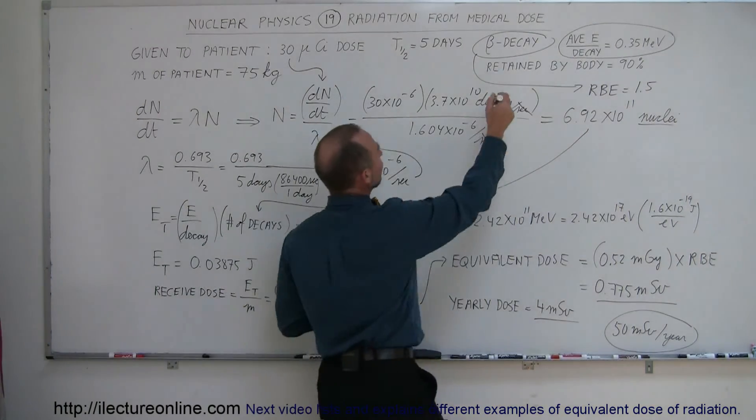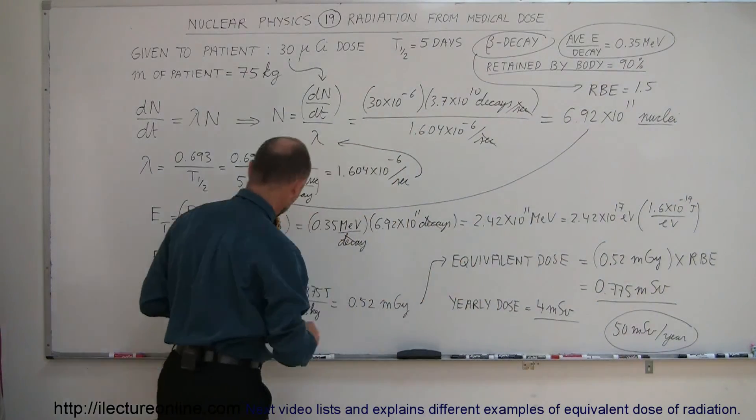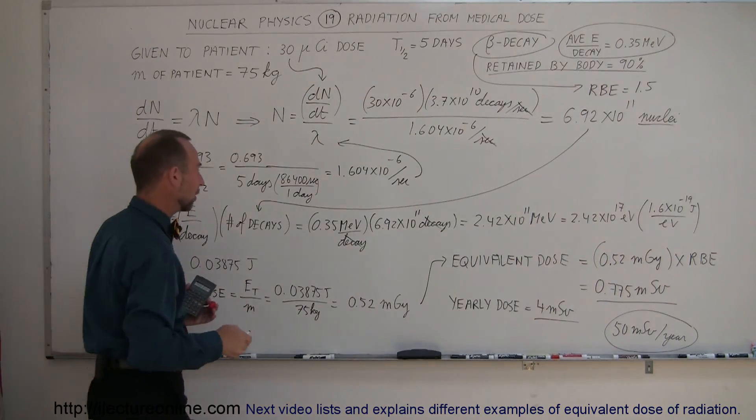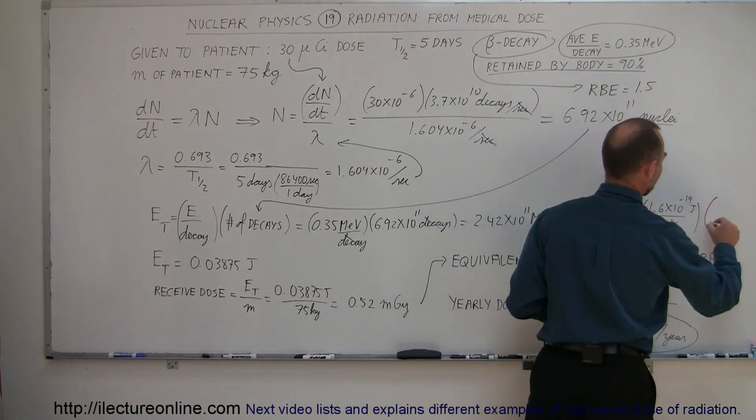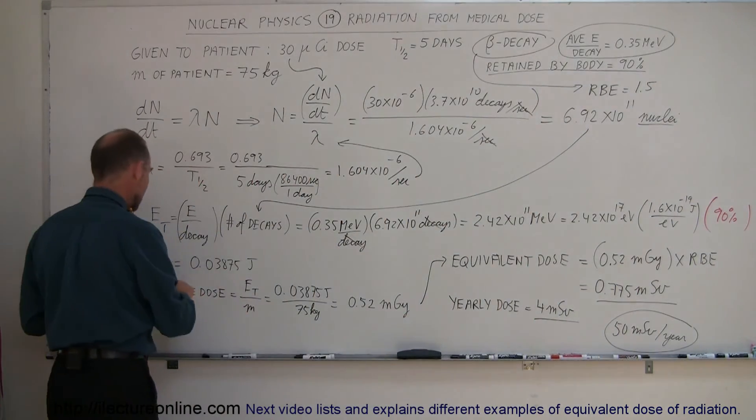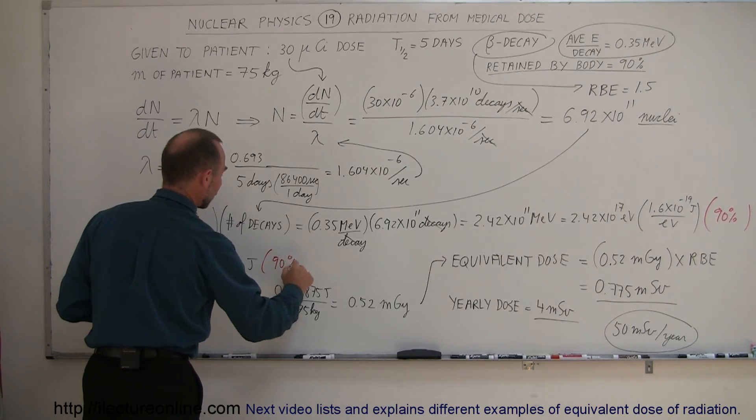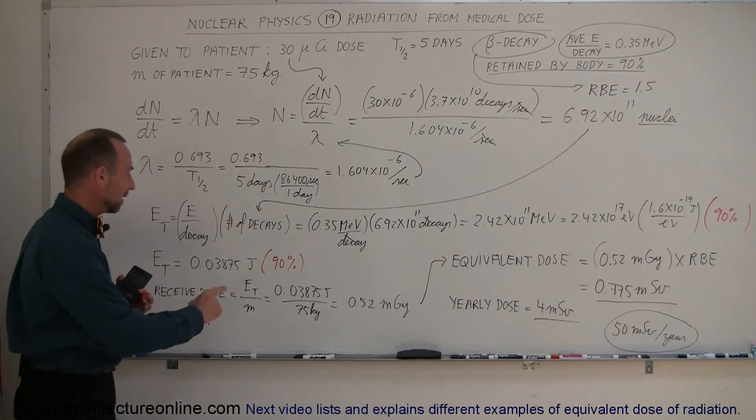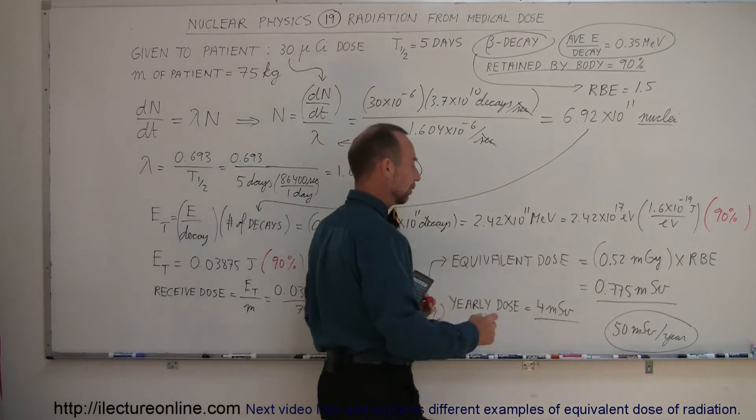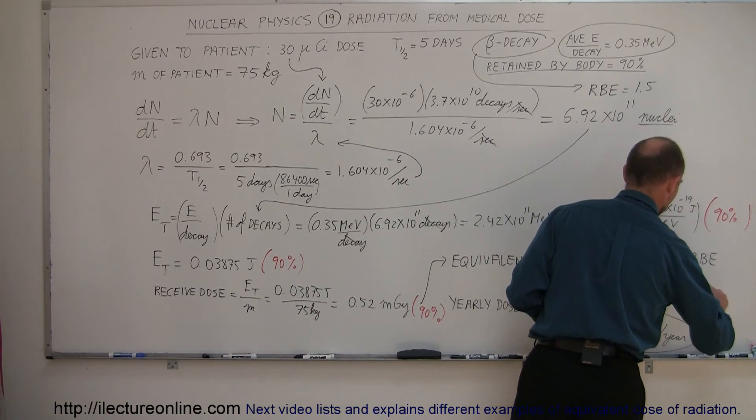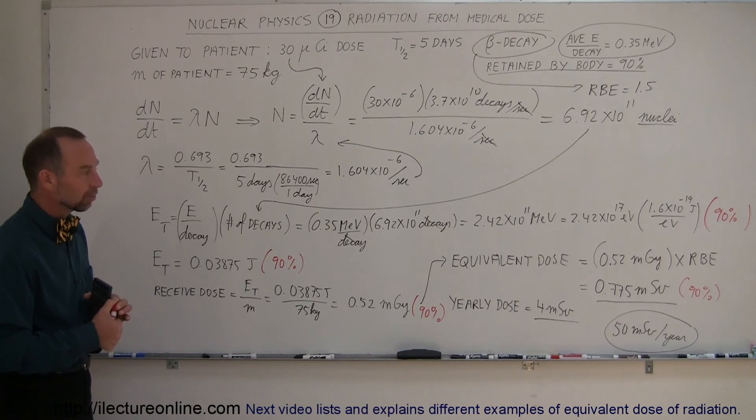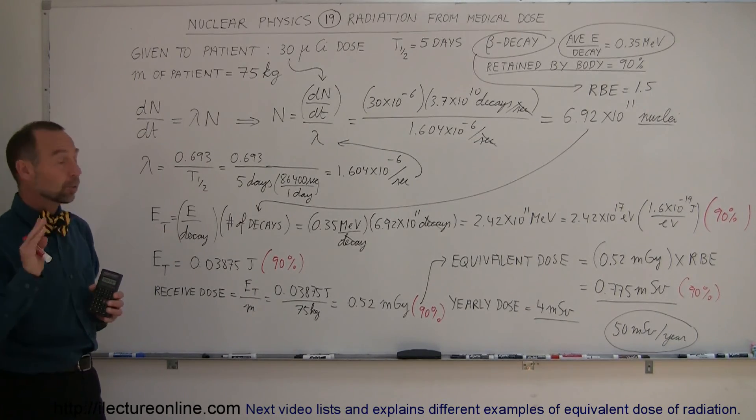Now, one thing I didn't do is I didn't take into account the 90%. I did say that only 90% of the energy is received by the body, so technically speaking, since we're not taking all of the energy, we should take that total energy and multiply it times 90%, which means that the total energy that we receive would have to be multiplied times 90%. Then the received dose would be smaller, only 90% of that, and of course all the way through we have to multiply this by 90% as well. So actually it's even a little bit better - the received dose is actually a little bit smaller because not all the energy is retained within the body.